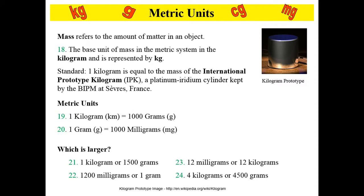Mass refers to the amount of matter in an object. Number 18 asks: what is the base unit of mass? The base unit of mass is the kilogram, represented by kg. The standard is that one kilogram equals the mass of the international prototype kilogram, pictured here — a platinum iridium cylinder kept in France, in a controlled environment so nothing can be added to or taken away from it.